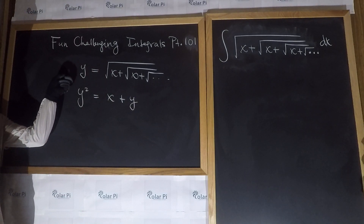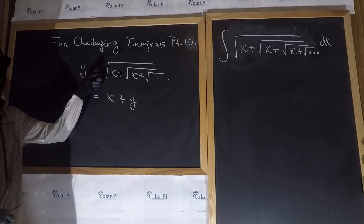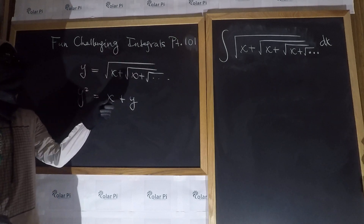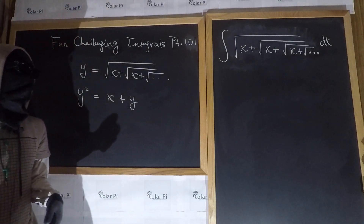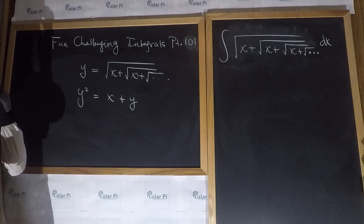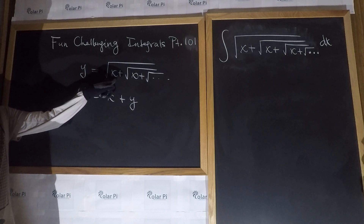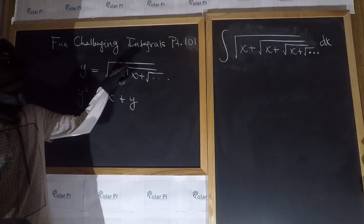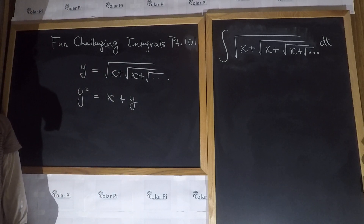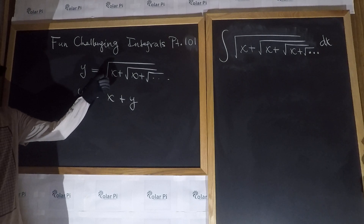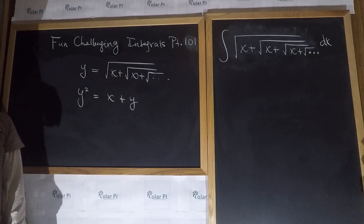If we square both sides of this equation, on the left we get y squared, but on the right, upon squaring this, we get rid of the first square root. So that means we'll have x plus this infinitely nested square root expression — but that's what we called y. So we get x plus y when we square the right-hand side.